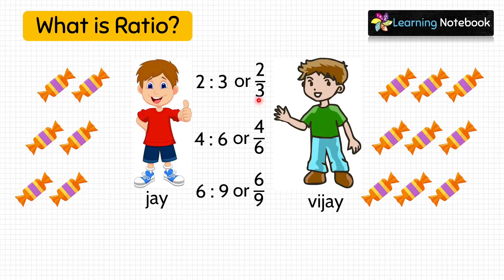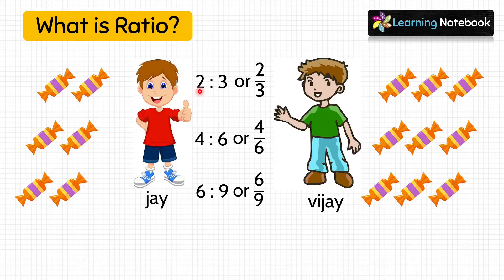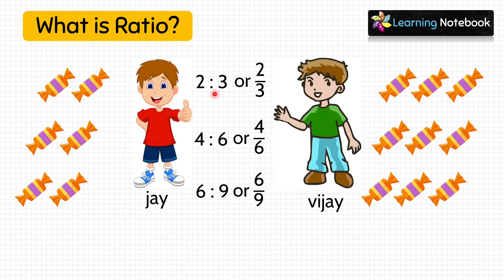This means Jai will always have chocolates in multiples of 2 and Vijay will always have chocolates in multiples of 3, and not just 2 chocolates and 3 chocolates. Some students have the confusion that the ratio 2 is to 3 means Jai will always have 2 chocolates and Vijay will always have 3 chocolates. But this is not the case. We have seen that if Jai has 4 chocolates, then Vijay will have 6 chocolates because the ratio of their chocolates is 2 is to 3.